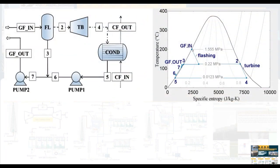For our model, this is our process model. Steam and brine come from a geothermal field into the flash tank. The steam is responsible for the turbine unit, with exhaust steam going to the condenser. We have two pressure levels: turbine pressure and geothermal pressure.